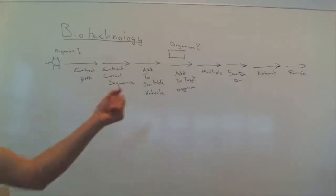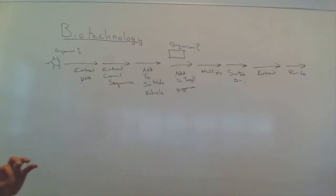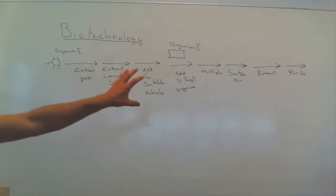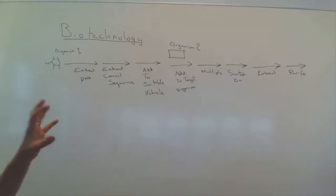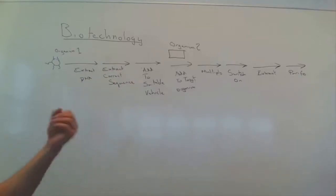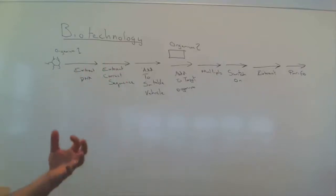Then we have to process it in some way and add it to a suitable vector for inserting it into the second organism, and we may have to edit it during that time so that it works better. Then we add it to the second organism and grow the organism or cells, usually while it's switched off using one of the operons that we would have added when we were adding the vehicle. So then we can switch it on and off when we want to — switch it on, make the product we want, and then extract it and purify it.